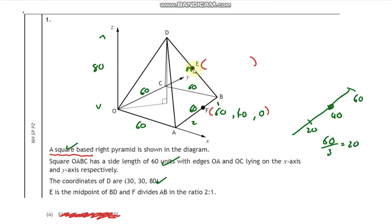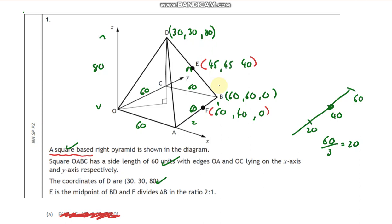Now for point E, it's halfway along line DB. D is (30, 30, 80) and B is (60, 60, 0). To find the midpoint: halfway between 80 and 0 in the z direction is 40. Between 30 and 60 in x we add them and divide by two to get 45, and the same in y. So E is (45, 45, 40). Let's double check — yes, that's correct.